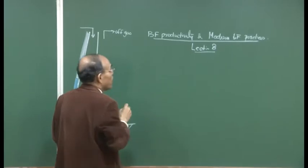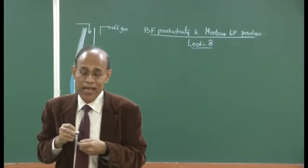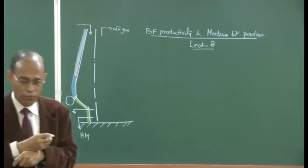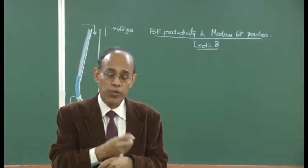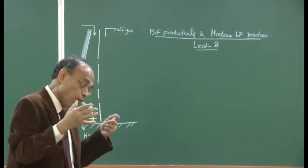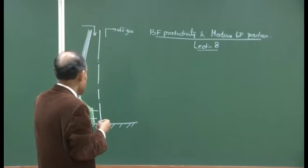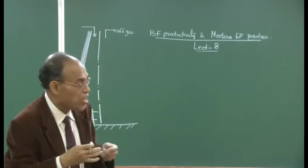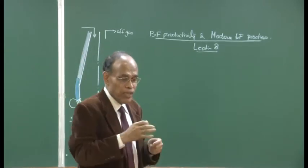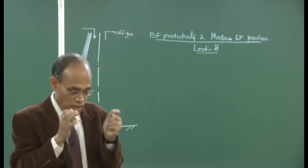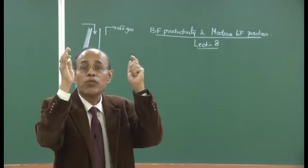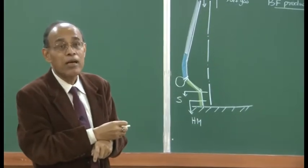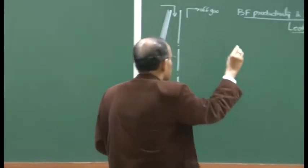Productivity is defined in terms of tons per meter cube per day. The widely accepted definition of blast furnace productivity is that the rate of production equals the total amount of gas blown into the furnace divided by the blast rate — that is, the volume of blast per ton of hot metal. That is the rate of production.